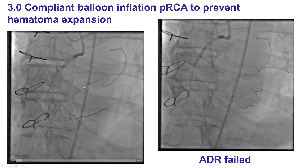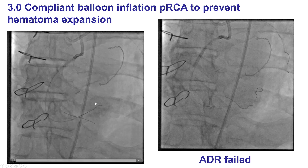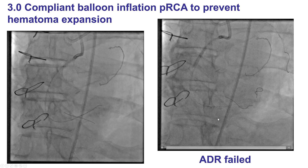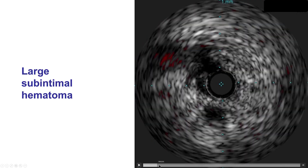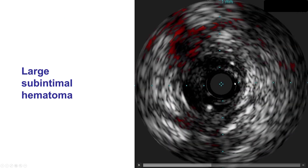We then switched back to antegrade attempts. There is a technique called the straw technique that can help decompress the hematoma created during antegrade subintimal crossing attempts. In this case, we advanced a balloon to block entry of blood into the subintimal space and then tried to aspirate through the stingray balloon, but once again that did not work. IVUS again showed that we did have a large hematoma — though this IVUS was done after successful crossing, it gives an idea of the large size of the subintimal hematoma.